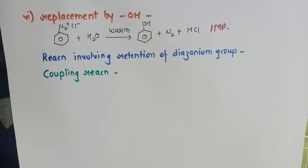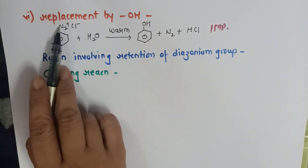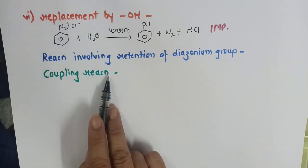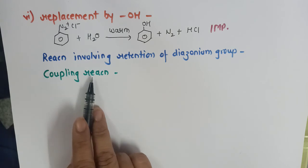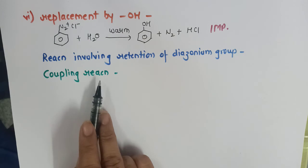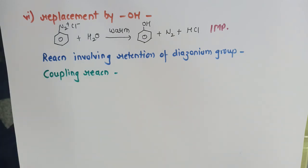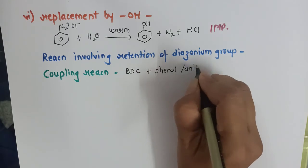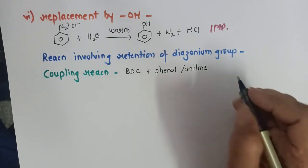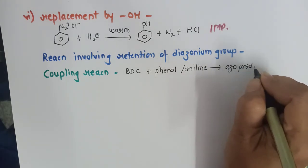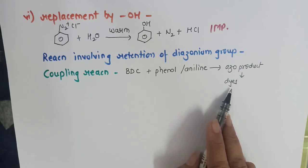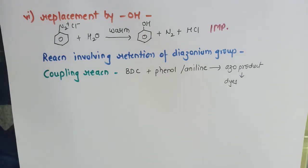Till now all the reactions involved complete removal of the diazo group. Now we will study reactions involving retention of the diazonium group — that is the coupling reaction, which is frequently asked and one you will also perform in the lab. In coupling reactions, BDC reacts with either phenol or aniline to give azo products. These azo compounds are used as dyes in the dye industry.